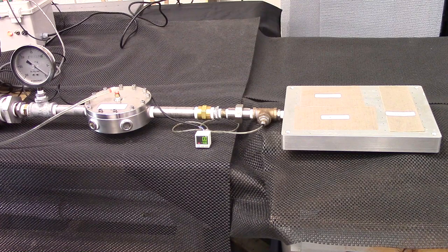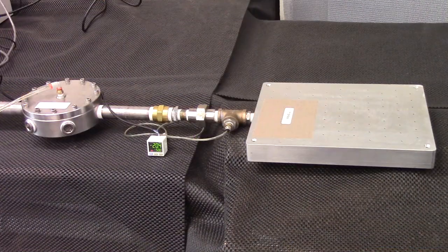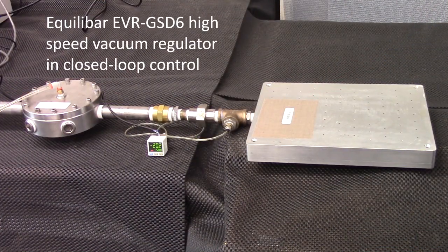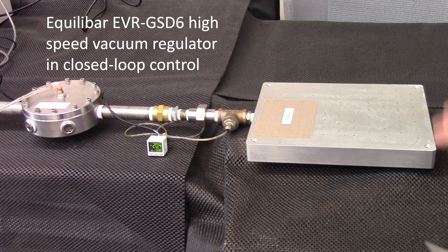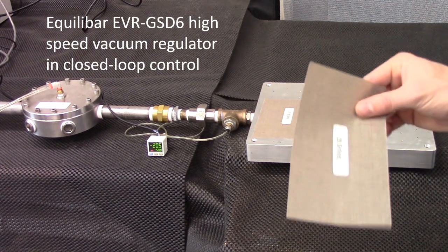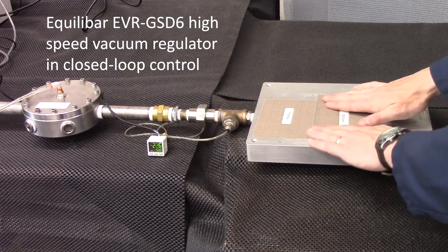Let's run the system and see what happens. Alright, so we'll start at 21 orifices blocked. This is the highest flow condition that the valve will see, and next we'll go to 28 orifices blocked.